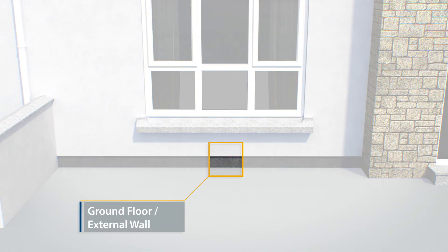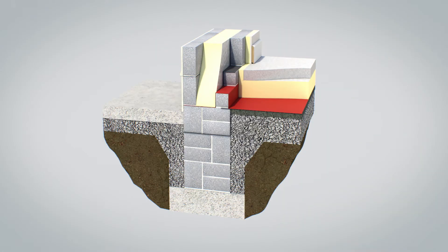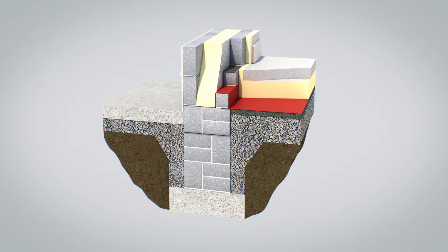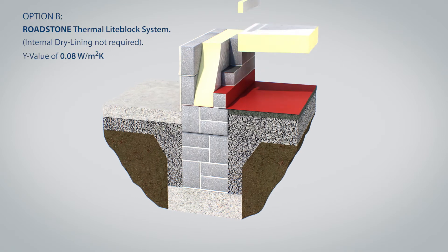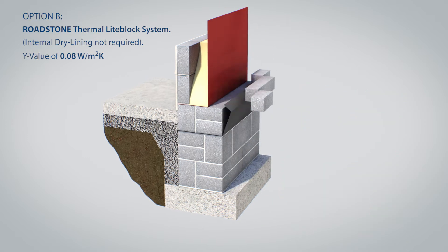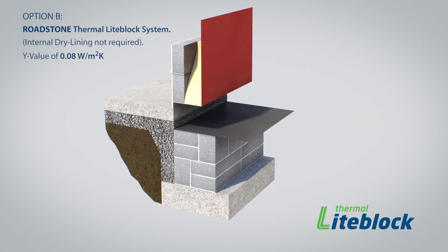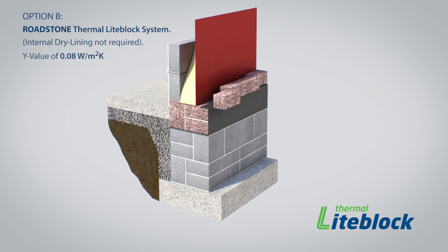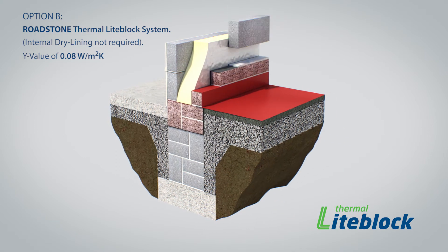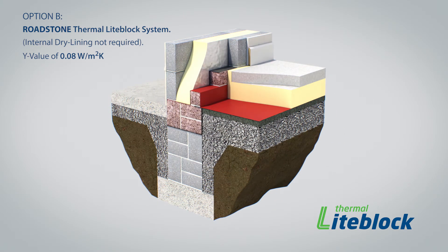Detail 1 is the junction of the ground floor and external wall. Option A shows a standard concrete block construction having a thermal bridge with a Y-Value of 0.15. Option B shows Roadstone thermal light block being used — two 100mm thermal light blocks on the flat with one 140mm thermal light block along with two 100mm thermal light soap bars. This allows the builder to use a Y-Value of 0.08, which allows the builder to remove the internal dry lining from the walls to accrue cost saving while maintaining the A2 house.